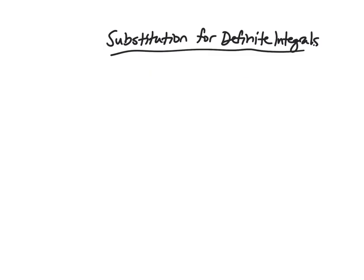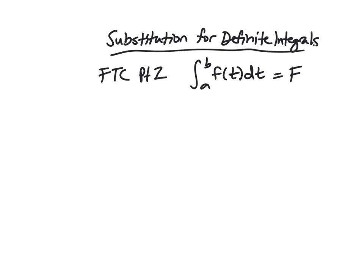We've done substitution for indefinite integrals. Now let's talk about how to do it for definite integrals. You might think: what's really the difference? We have the fundamental theorem part 2, which says that once we know some antiderivative big F, a definite integral is just F of b minus F of a. The issue is what you do with your bounds. Because once you change your variable, you change your bounds — x being between 0 and 2 doesn't mean that your inside function is between 0 and 2.